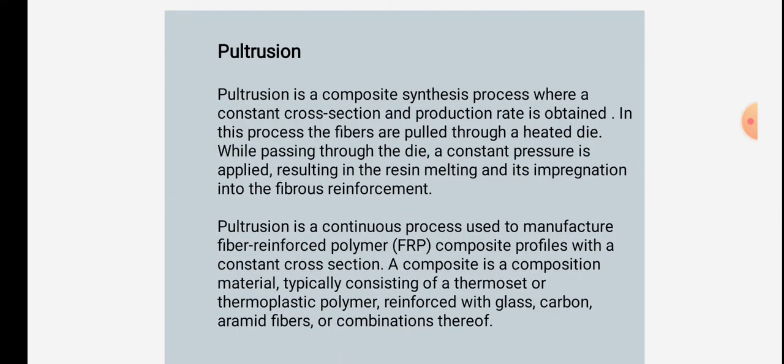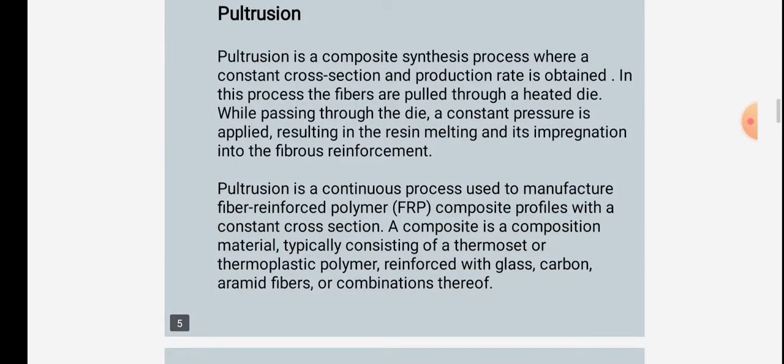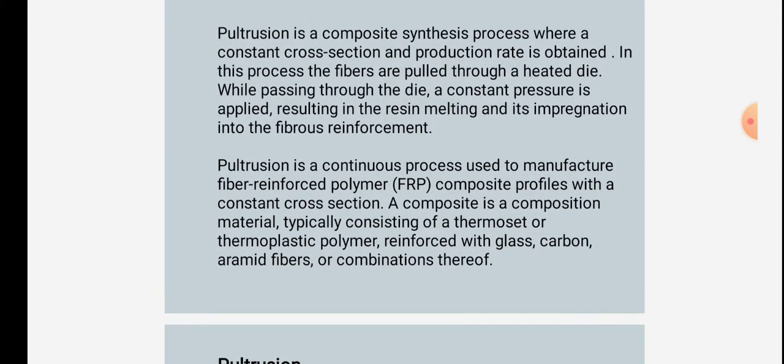Pultrusion is a composite synthesis process where a constant cross-section and production rate is obtained. In this process, the fibers are pulled through a heated die. While passing through the die, a constant pressure is applied, resulting in resin melting and its impregnation into a fibrous reinforcement.